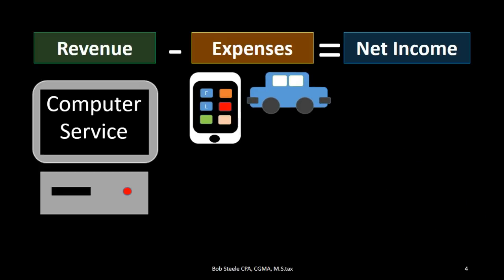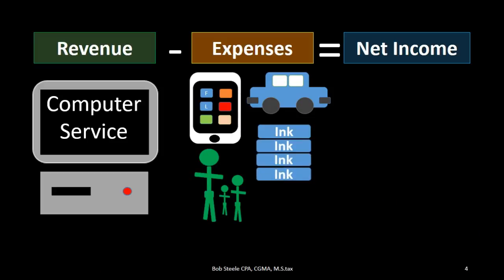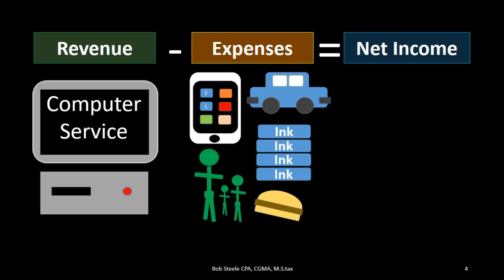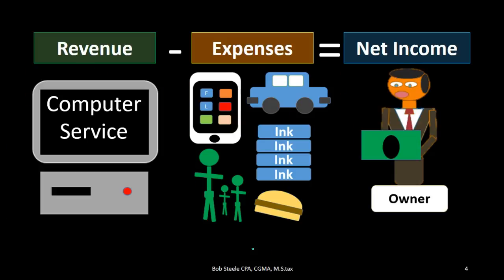For example, the phone could be an expense. We can have the auto expense — not the auto itself, which is an asset, but the gas and the maintenance would be an expense; that's what we consumed. We could have wages expenses, supplies expenses — again not the supplies themselves but as we use and consume them we are expensing them. We can have meals and entertainment. So we have revenue — what we're going to generate over this time period — and expenses, the things we had to consume in order to help generate that revenue.